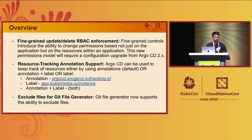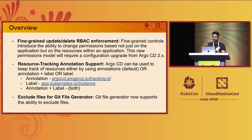The last feature I personally like is the ability to exclude files using the git file generator. Previously with the git generator you could exclude directories when using the git directory generator, but when using the git file generator you could only include files. Now, with the 3.1 version, you can also exclude files when using the git file generator.